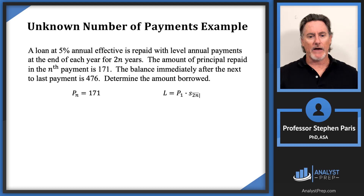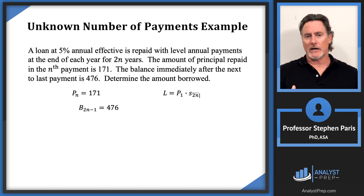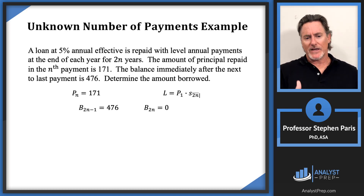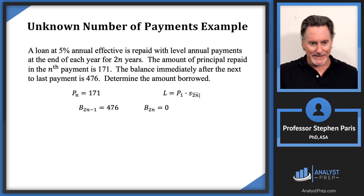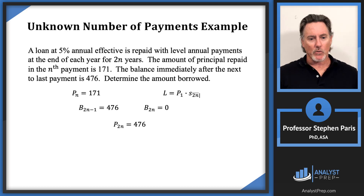The next-to-last payment is payment number 2n−1, so the balance immediately after it gives us B_{2n−1} = 476. After the last payment, the balance is zero: B_{2n} = 0. From these two neighboring balances, the amount of principal repaid in the last (2nth) payment is B_{2n−1} − B_{2n} = 476, so P_{2n} = 476.